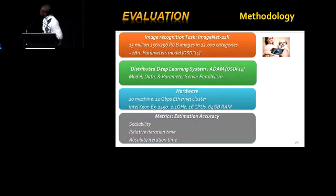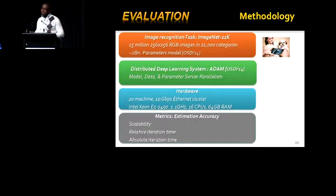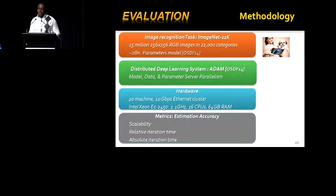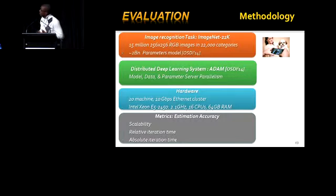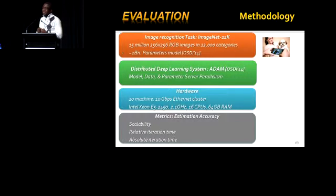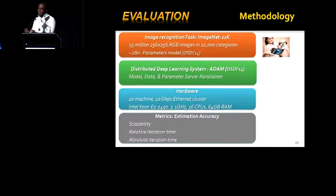For evaluation, we used an image recognition task — ImageNet22K, classifying 15 million high-resolution images into 22,000 categories. We used a state-of-the-art model with about 2 billion parameters, and the Adam Deep Learning System for distributed deep learning, which provides the three knobs of model parallelism, data parallelism, and parameter-server parallelism. We used a small cluster of 20 commodity servers. The evaluation focuses on the performance models: how accurately they estimate the scalability of each parallelism technique, how well they estimate relative performance between configurations, and how well they estimate absolute iteration time.